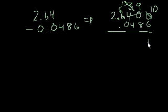10 minus 6 is 4. 9 minus 8 is 1. 13 minus 4 is 9. 5 minus 0 is 5. 2 minus nothing is 2. Bring down the decimal point. So 2.64 minus 0.0486 is equal to 2.5914. Hope I didn't confuse you too much. But I think you're ready now to try the subtraction of decimals. Have fun.